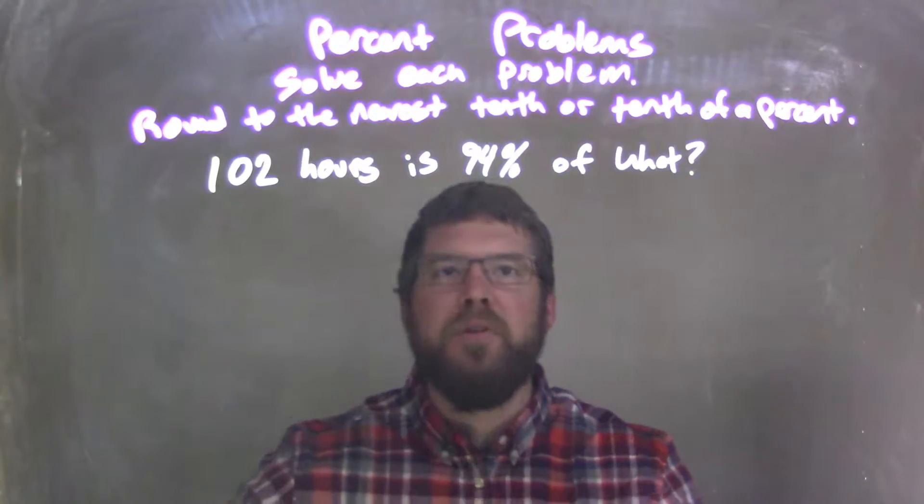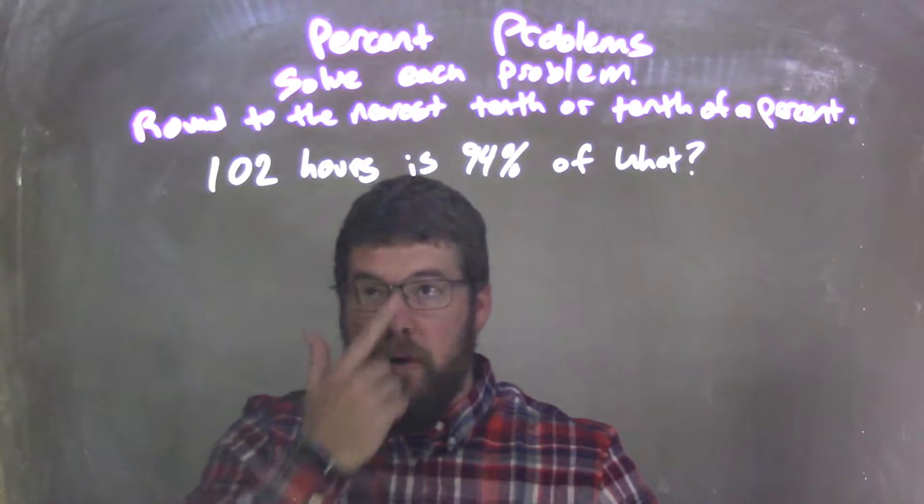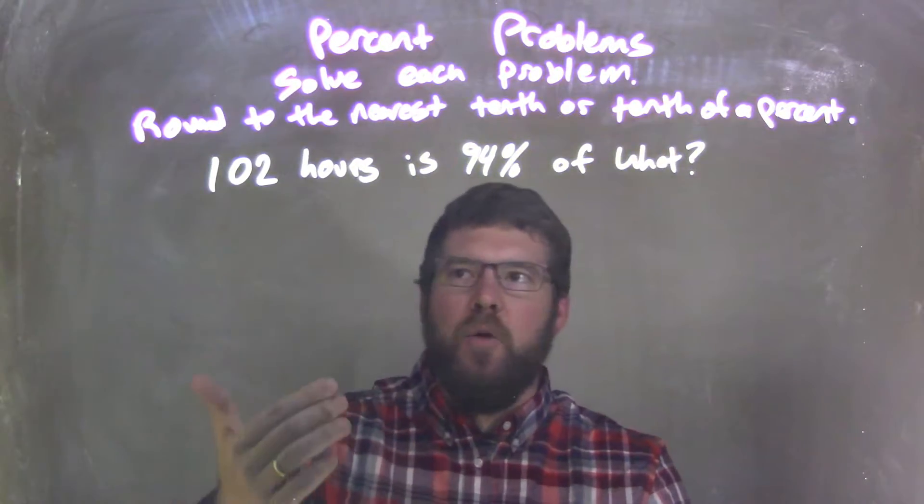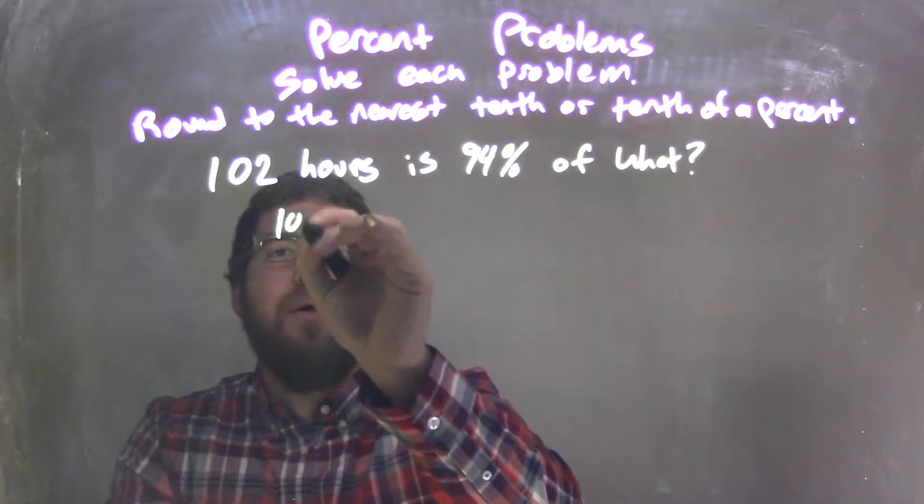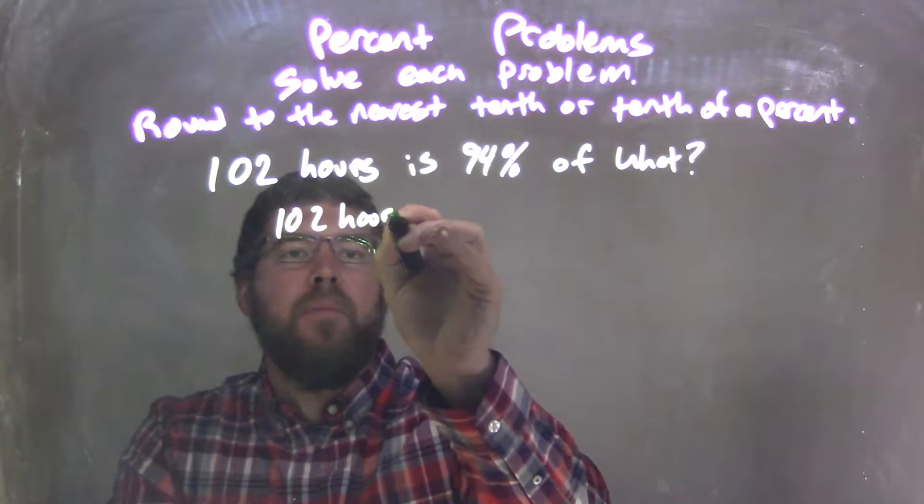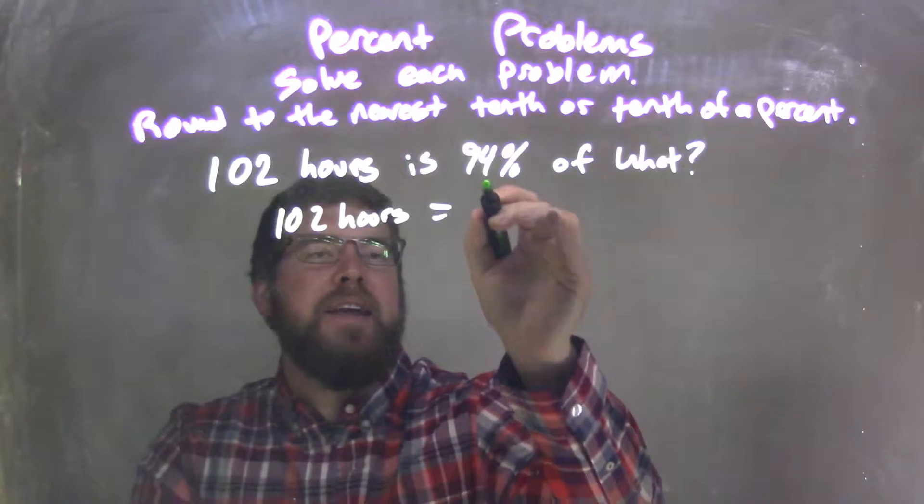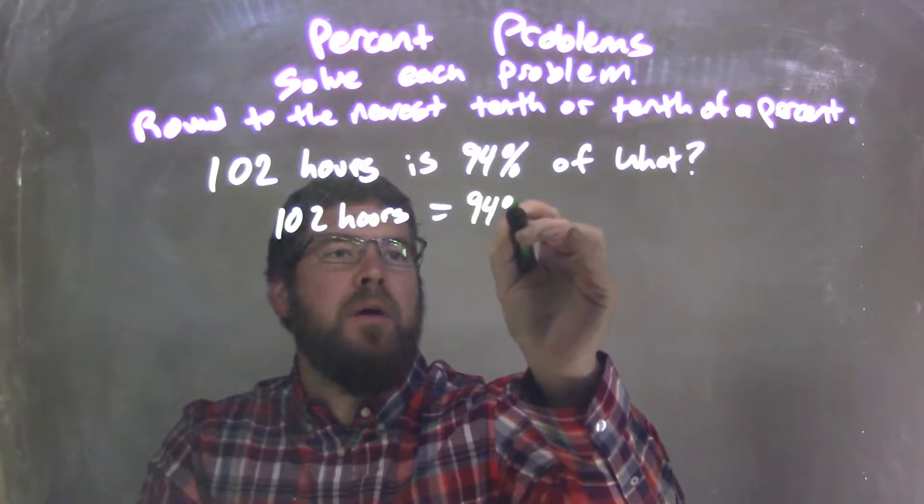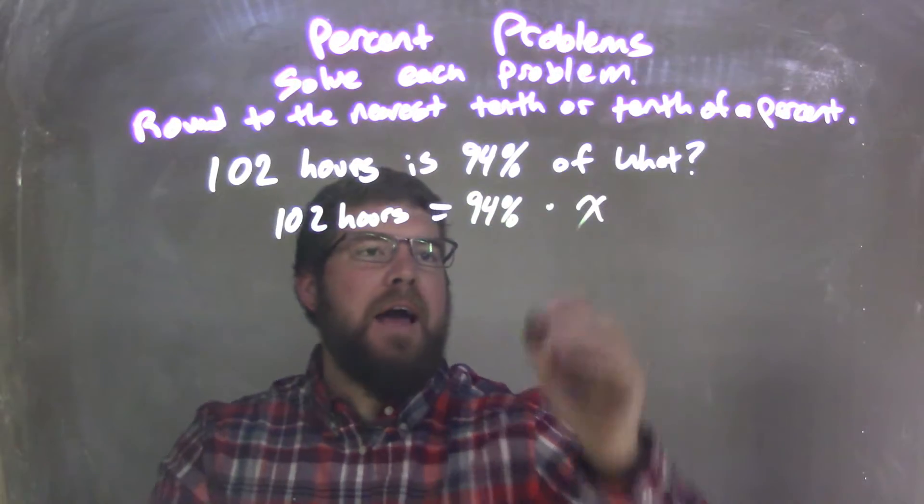So 102 hours is 94% of what? Well, I need to write that as an equation. I'm going to write 102 hours equals 94% of, multiplication of what? X.